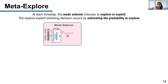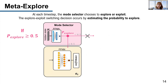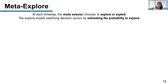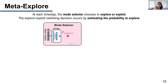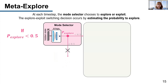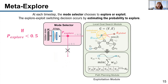If p-explore is greater than or equal to 0.5, the exploration module is activated and outputs an action. If p-explore is less than 0.5, the exploitation module is activated. The agent searches for a local goal, and after it is chosen, we use a path-planning algorithm to move the agent toward the local goal, since we already have a topological map.